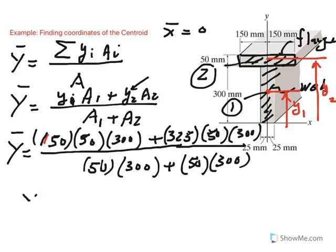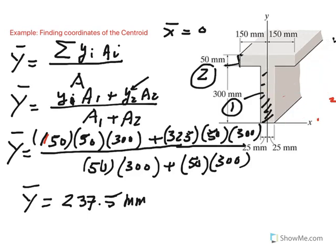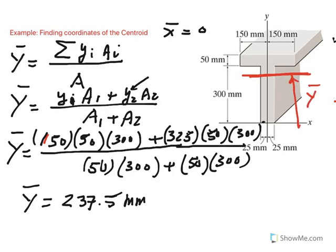If you do the calculation here, that comes out to be 237 and a half millimeters. That y-bar then would be measured from our reference. So we have calculated that that's the location of the centroid.